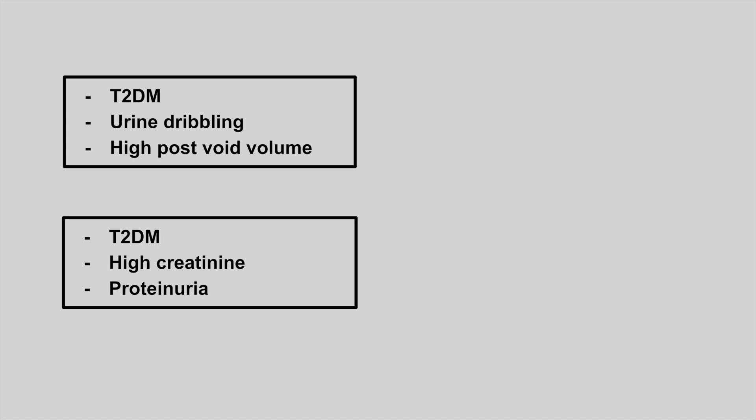The next patient is a type 2 diabetic with dribbling of urine and a high post-void volume. This is neurogenic bladder.